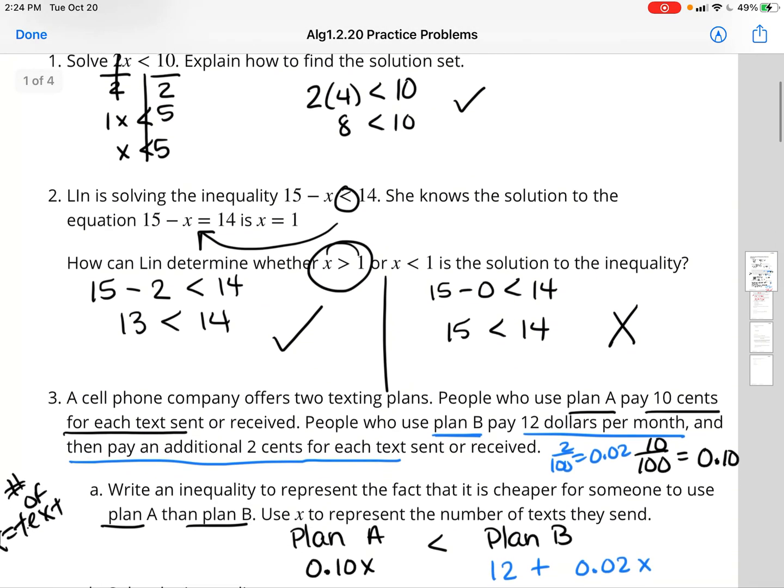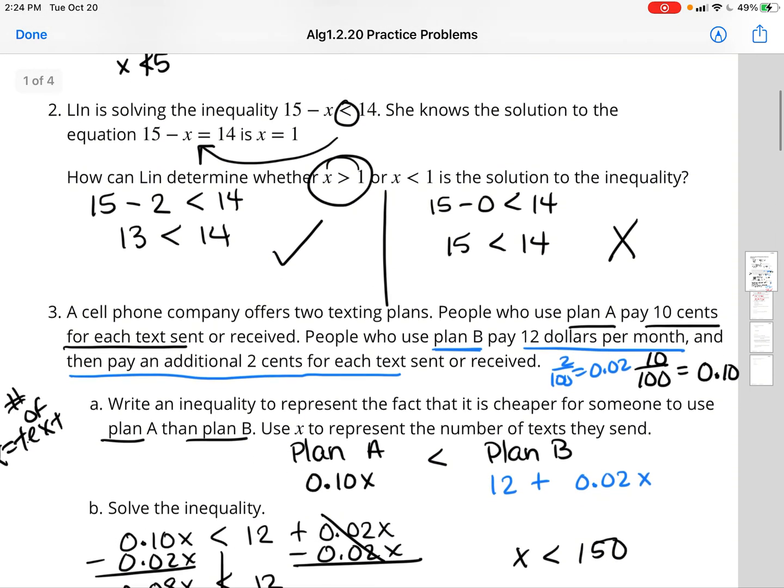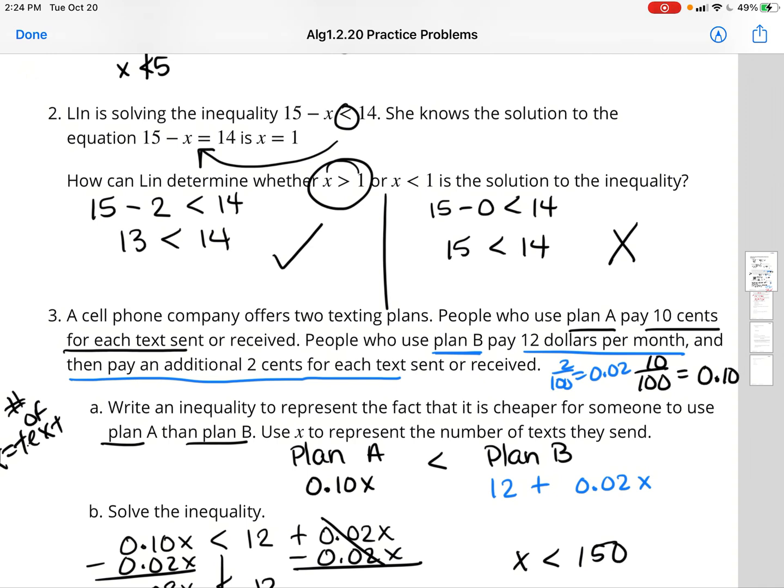Number 2, our famous Lynn, is solving the inequality 15 minus x is less than 14. She knows the solution to the equation 15 minus x equals 14 is x equals 1. So Lynn decided to just take out the inequality and she put the equal sign. You will still solve this in the same way. In the end, she wants to know, is my answer going to be x is greater than 1 or x is less than 1?